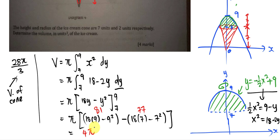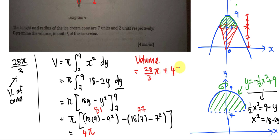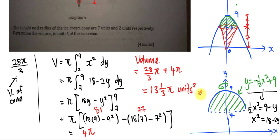To get the total volume of the ice cream, we add the volume of the cone and the volume of the top part: total volume equals 28π over 3 plus 4π. Converting 4π to thirds gives 12π over 3, so total equals 40π over 3, which in mixed number form is 13 and one-third π unit cubes.